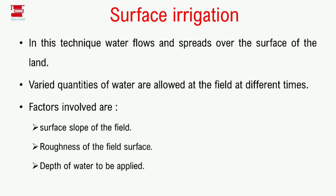What is surface irrigation? In this technique, water flows and spreads over the surface of the land. Surface irrigation depends on three factors: the slope of the land, the roughness of the field surface, and the depth of water to be applied.